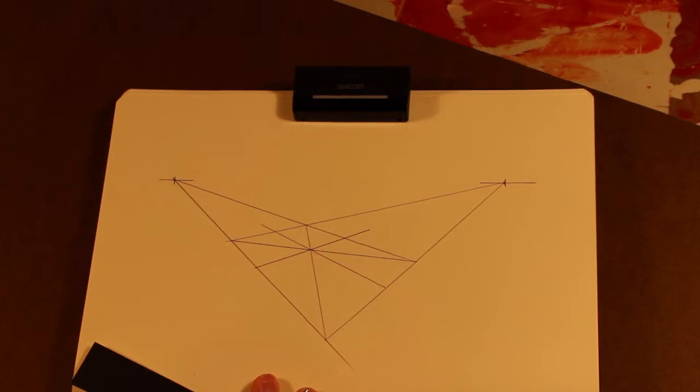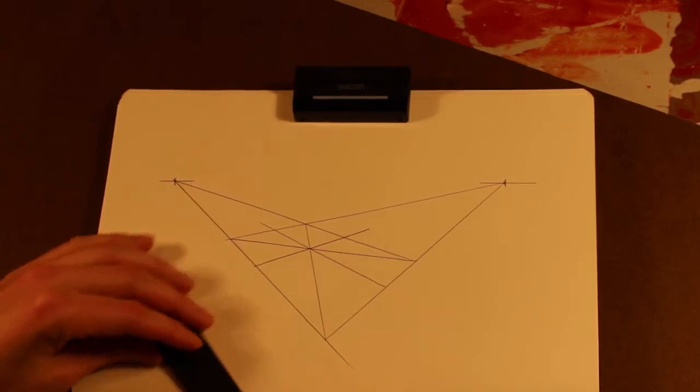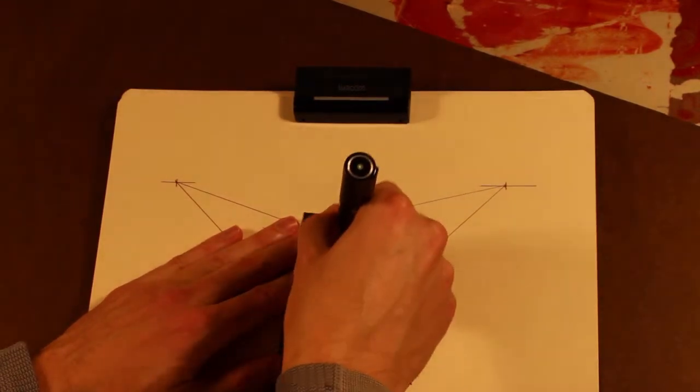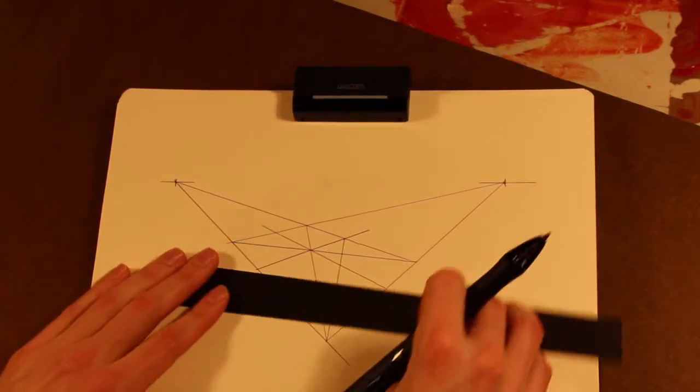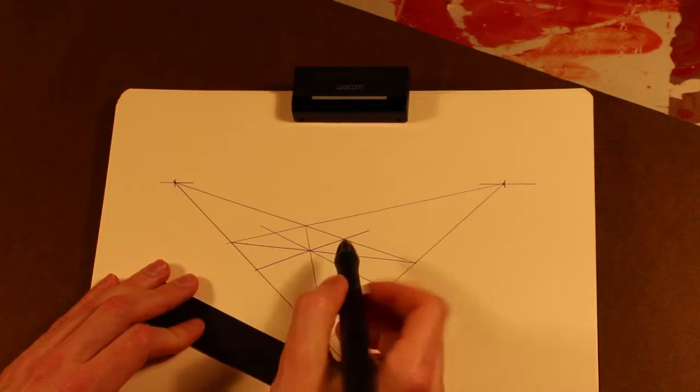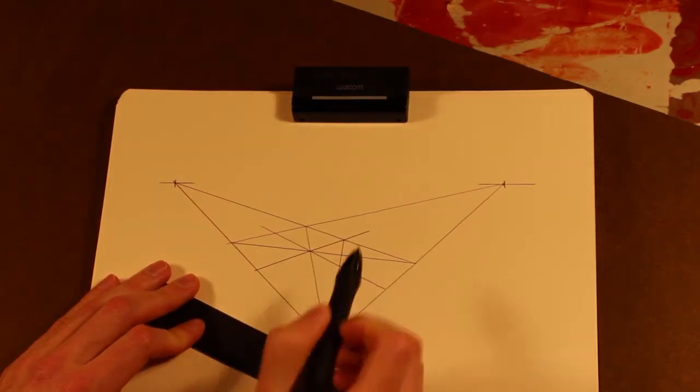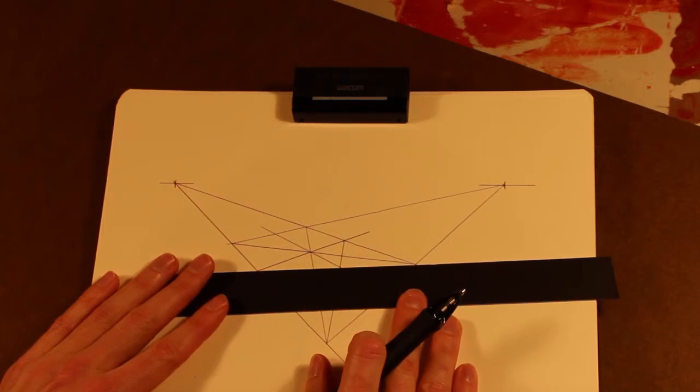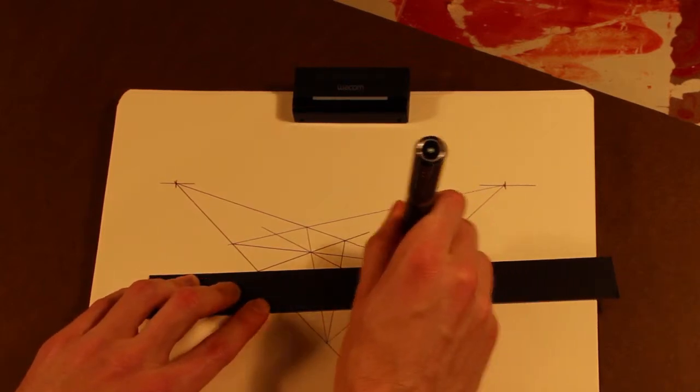So we have to subdivide it again, draw another X in each of these. And here you notice that you've got this point, so just to be sure you can draw that X, but you don't necessarily have to.